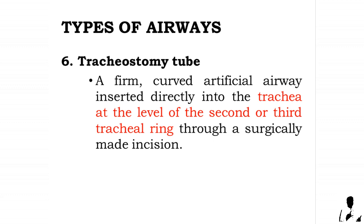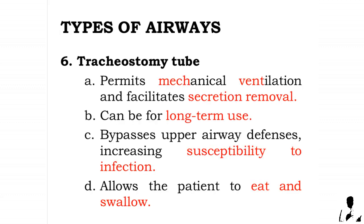Six: the tracheostomy tube. It is a firm, curved artificial airway inserted directly into the trachea at the level of the second or third tracheal ring through a surgically made incision. It permits mechanical ventilation, facilitates secretion removal, can be used for long-term care, but bypasses upper airway defenses increasing susceptibility to infection. It allows the patient to eat and swallow.